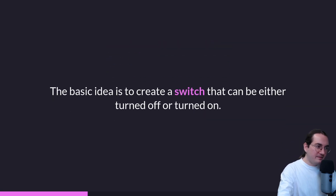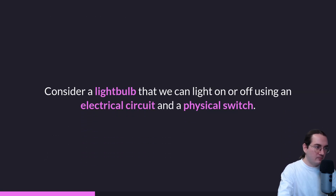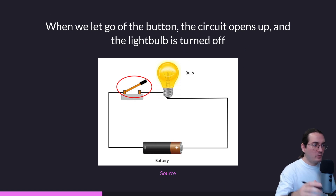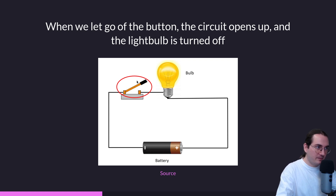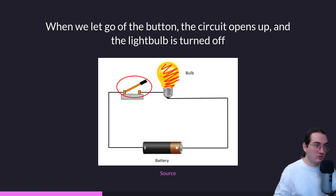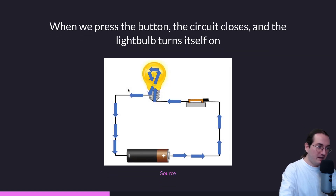The basic idea is to work with a switch. If you think about bits, you have to think about switches — a switch that can be turned either on or off, depending on whether you want to represent zero or one. Consider for example a light bulb that we can turn on or off using an electrical circuit and a physical switch. We have a battery, a light bulb, and a physical switch. When we release the button the circuit opens and the light bulb turns off — no electricity flows.